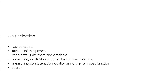In this module, we're going to cover unit selection. We're going to look at the entire system, the key concepts that are involved, the idea of selecting from a large database of relatively natural recorded speech, and using some cost functions to choose amongst the many possible sequences of units available in that database.